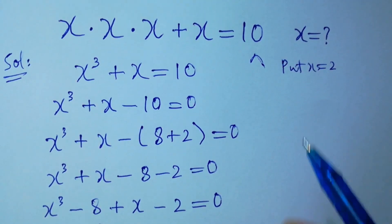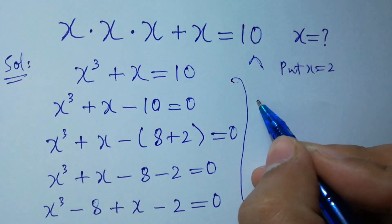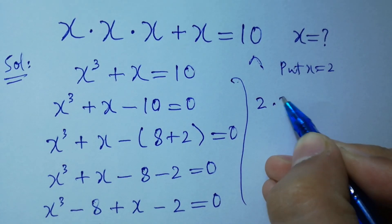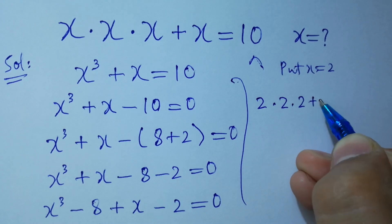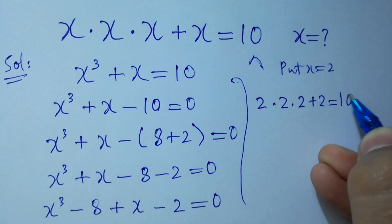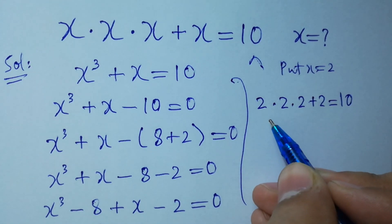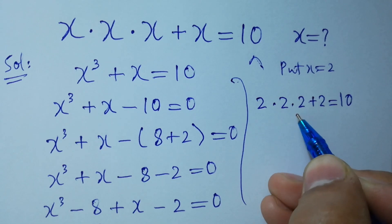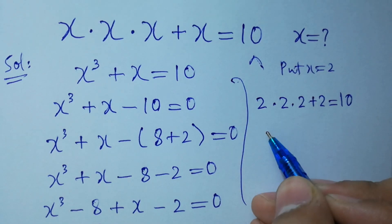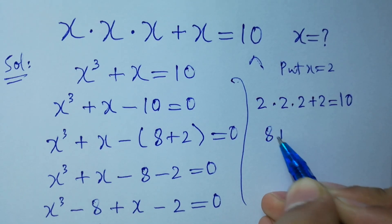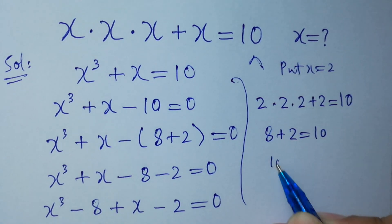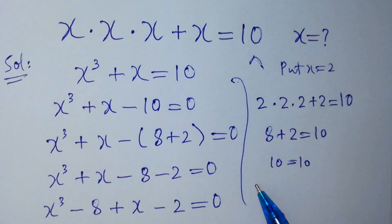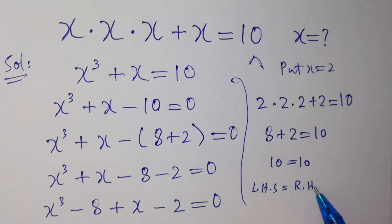Now we verify: put x equals 2 into the original equation. 2 times 2 times 2 plus 2 equals 10. 2 times 2 is 4, times 2 is 8, plus 2 equals 10. Left hand side equals right hand side. Verified.